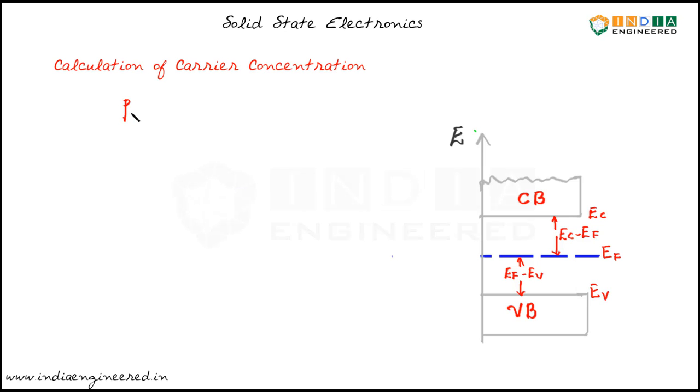The concentration of holes in the valence band equal to Nv, that is the effective density of states at the valence band edge, into e power minus this energy difference, that is Ef minus Ev by kt.